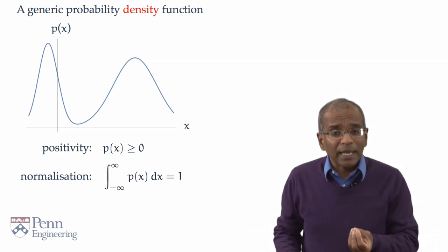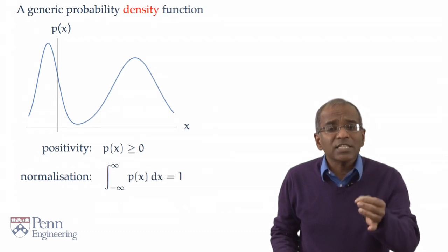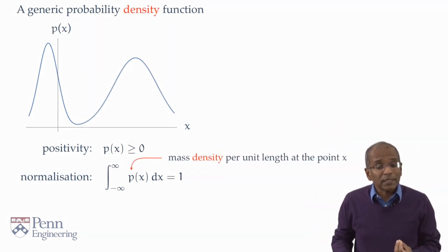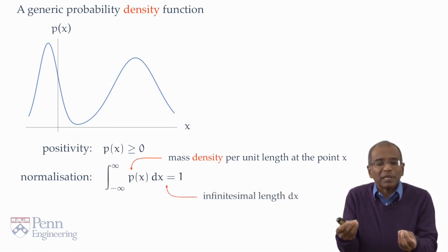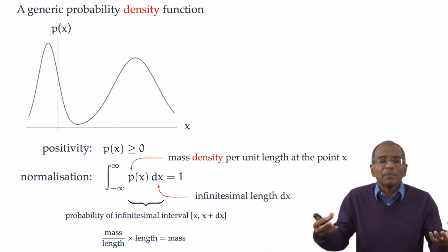Bear in mind here that your p of x connotes a mass density in units of probability mass per unit length. d of x multiplying it is an infinitesimal length. And when you have mass over length times length, we end up, in fact, exactly with mass.